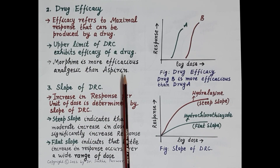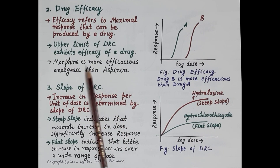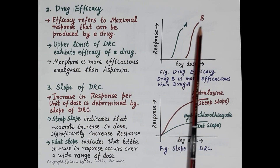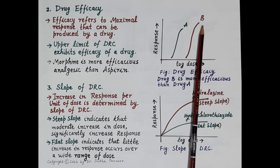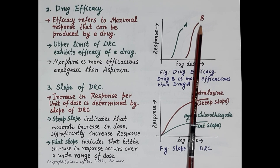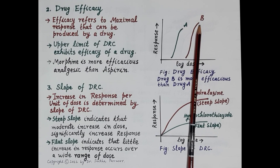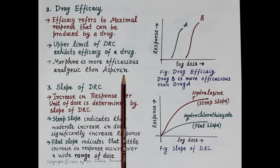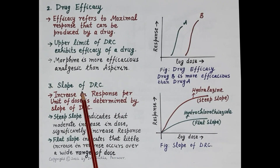For example, morphine and aspirin are both analgesics (painkillers). The analgesia produced by morphine cannot be produced by even the highest possible dose of aspirin. So morphine is a more efficacious analgesic than aspirin.